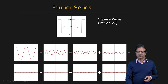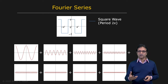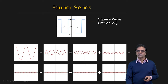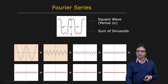So let's take the first sinusoid shown here. And by the way, all of these sinusoids have been determined by the Fourier transform. The first one gives you a crude approximation of the square wave. Let's add one more, and you get that. A few more after that.